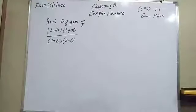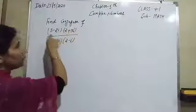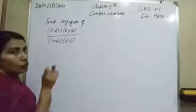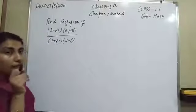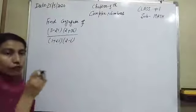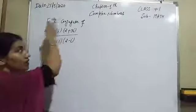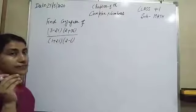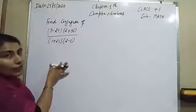Now come to the next question of this worksheet. We have to find the conjugate of (3 minus 2 eta) times (2 plus 3 eta), divided by (1 plus 2 eta) times (2 minus eta). Keep in mind: whenever we have to find the conjugate, the multiplicative inverse, or the modulus, firstly we have to convert all these into the form of a complex number.